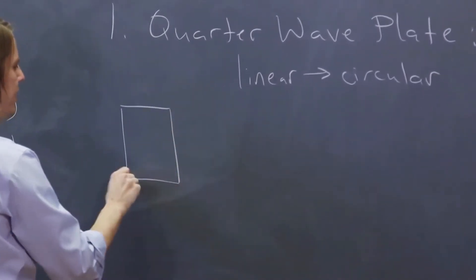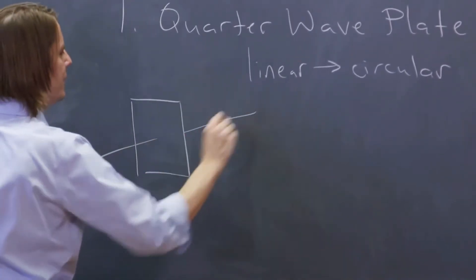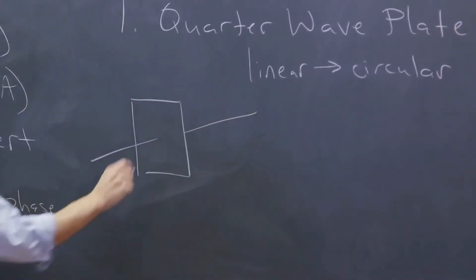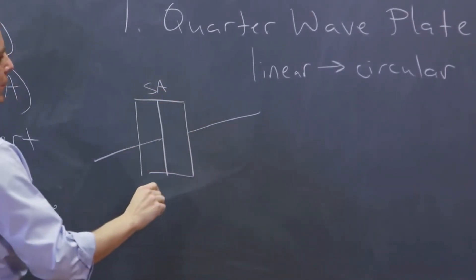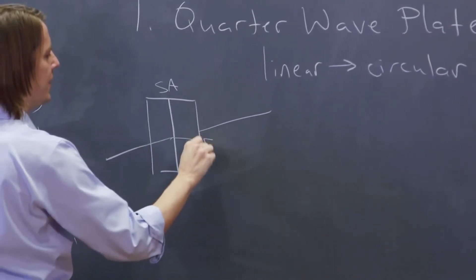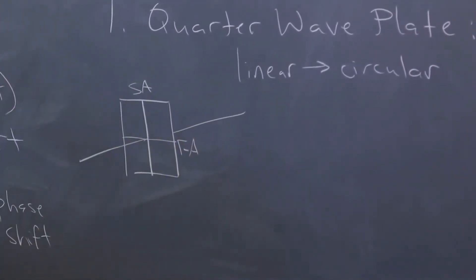So you would have your wave plate like this, and optical axis going into it like that. And let's have the quarter wave plate with the SA, the slow axis, vertical, and the fast axis, horizontal, like that.